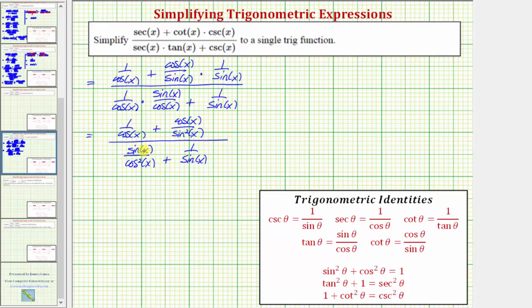So looking at all the fractions, notice how the least common denominator would be cosine squared x times sine squared x. This means for the next step, we'll multiply the top by sine squared x times cosine squared x, and we'll also multiply the bottom by sine squared x times cosine squared x. Because we're multiplying the top and bottom by the same factors, this is equivalent to multiplying by one.